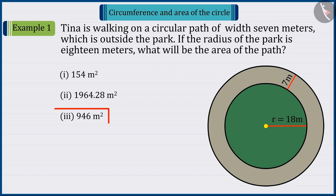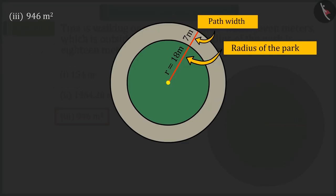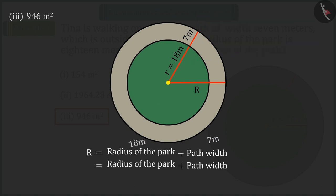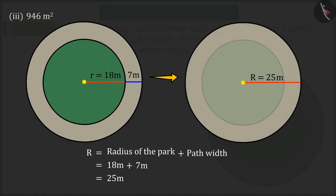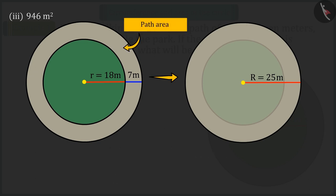Come, let's discuss option 3. Since it is given that Tina is walking on a 7 meters circular path, which is outside the park, we can say that this circular path and the total radius of the park, that is R, will be 25 meters, which we would have displayed from this circle. So, can you find the area of the path from this? Come, let's see.